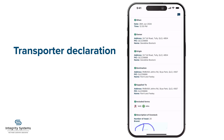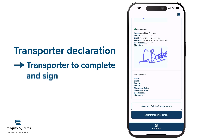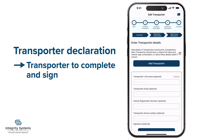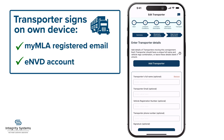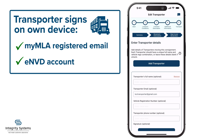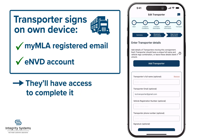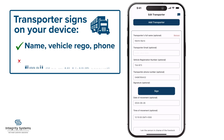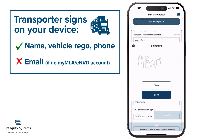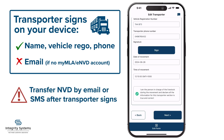Now it's time to enter the transporter details. This is the transporter's declaration, so the transporter needs to complete and sign it. There are a few ways this can be done. For transporters with a MyMLA registered email and ENVD account, just enter their email here, and once you submit the ENVD, they'll have access to complete it — that way they've also got their copy of the consignment. Alternatively, they can sign on your device: just enter their details and let them do it right here. Don't include their email if it's not registered to a MyMLA account with ENVD access.